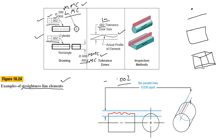To see this more clearly, here are two views of a cylinder. The actual line element of this cylinder must lie between the tolerance zone. If it does, we say that the straightness on this cylinder is as required.